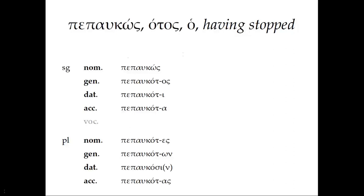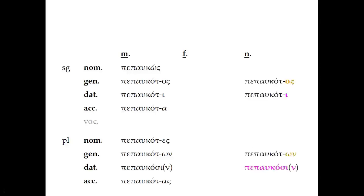Now, for the neuter, we're going to see something very similar. In fact, the genitive and the dative, both singular and plural, are going to be exactly the same. For the singular nominative and accusative, we're going to have a unique form, πεπαυκός. It's very similar to πεπαυκώς. And for the plural nominative and accusative, it's actually going to be the same as the masculine accusative singular. So, we'll just plug that right in.